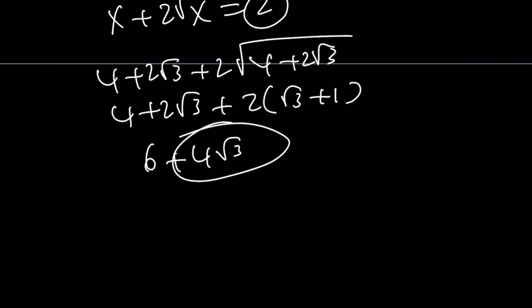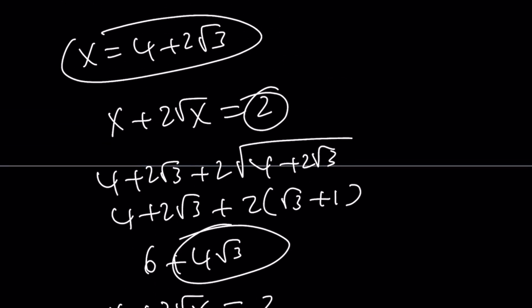So the problem comes from the fact that we were squaring both sides. We're introducing extraneous problems. Houston, we have a problem. So the issue comes from the fact that we start with this, and then we square both sides, and we introduce extraneous solutions. So here's what we're going to do. Instead of using x equals 4 plus 2 root 3, we are going to use the other root, x equals 4 minus 2 root 3.